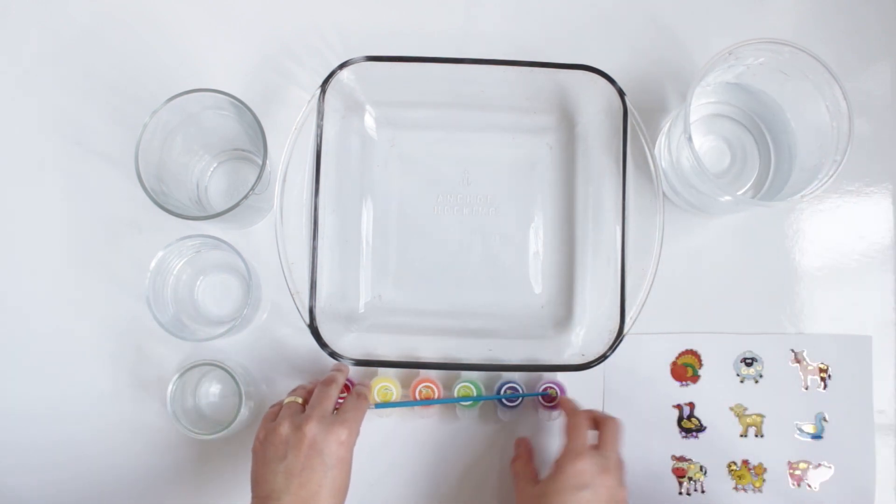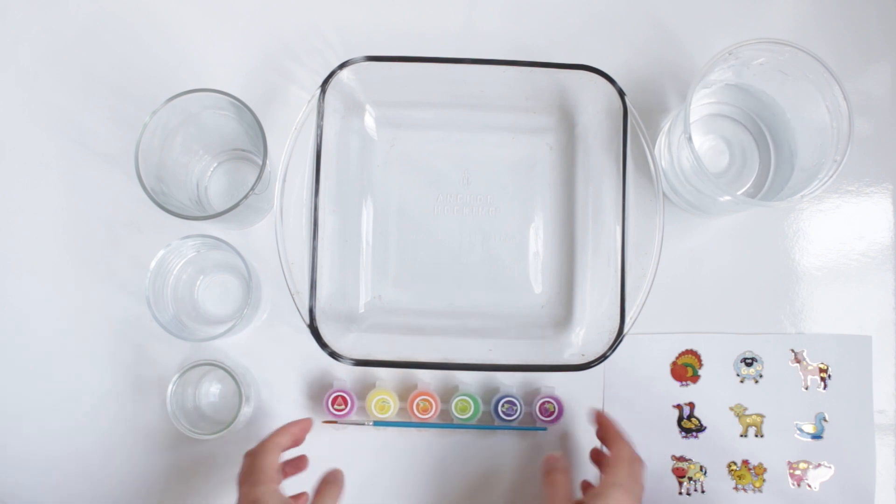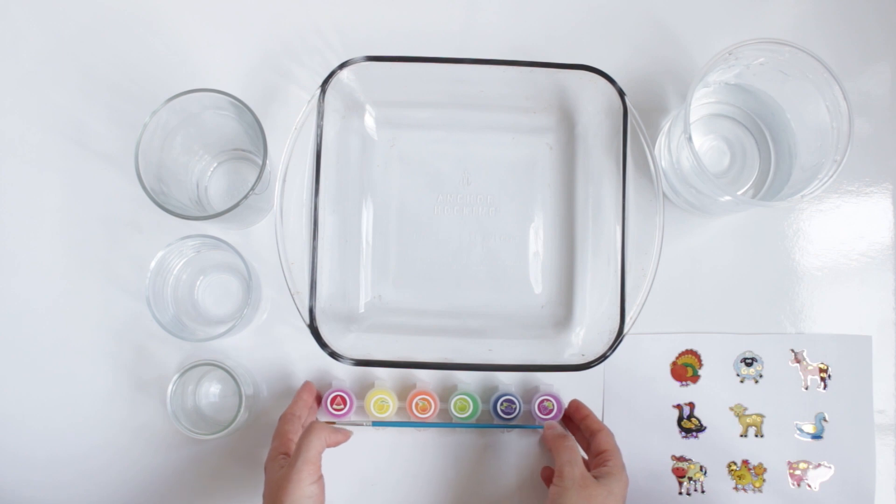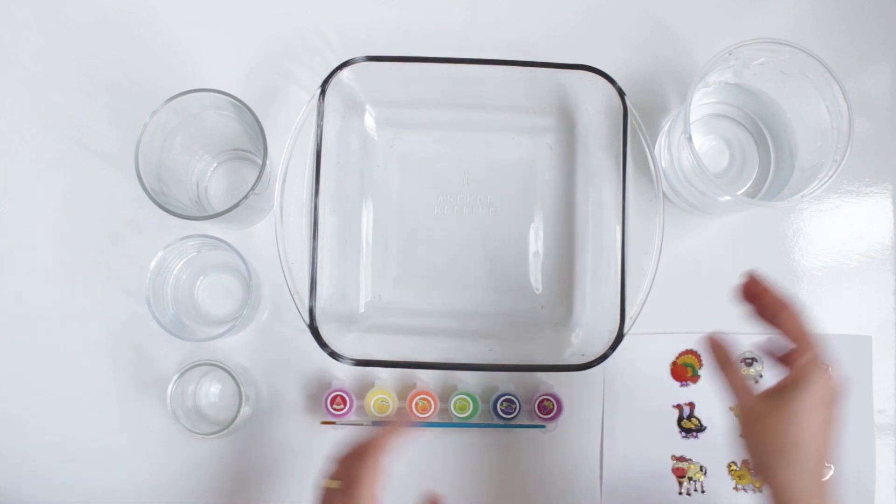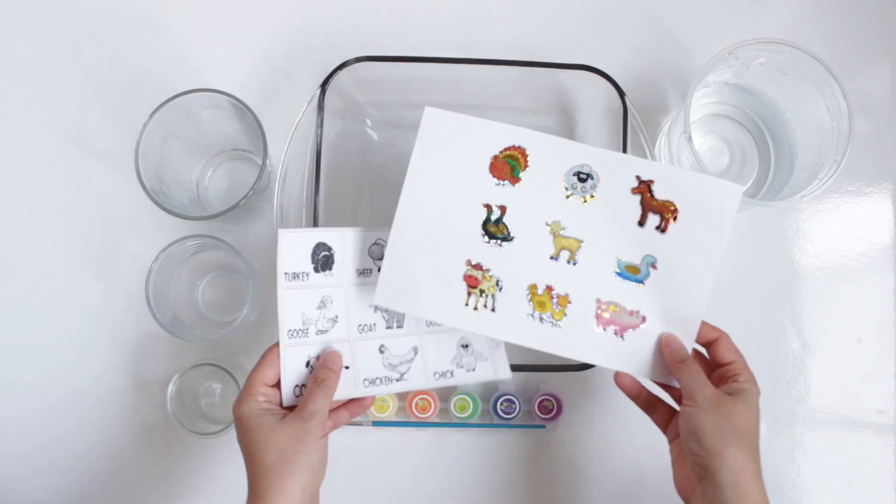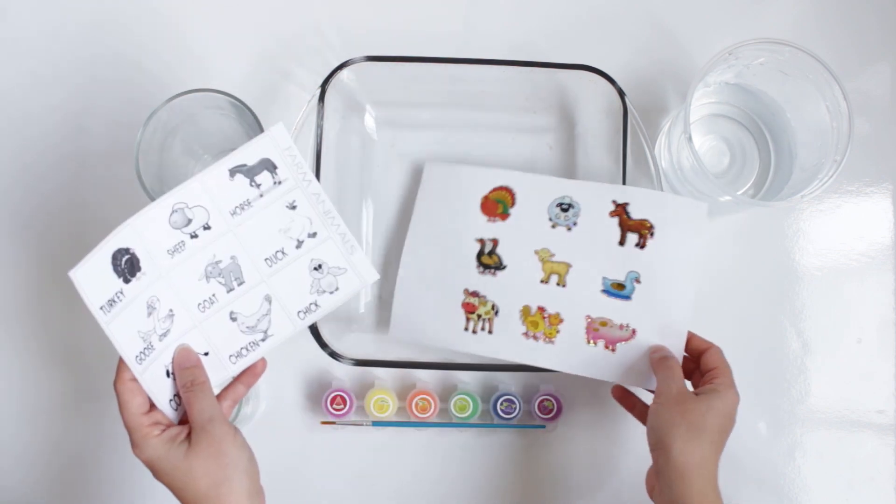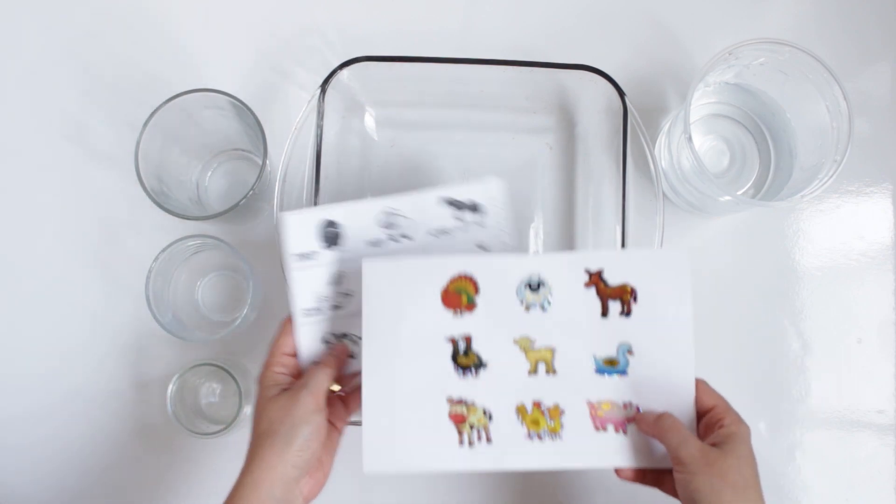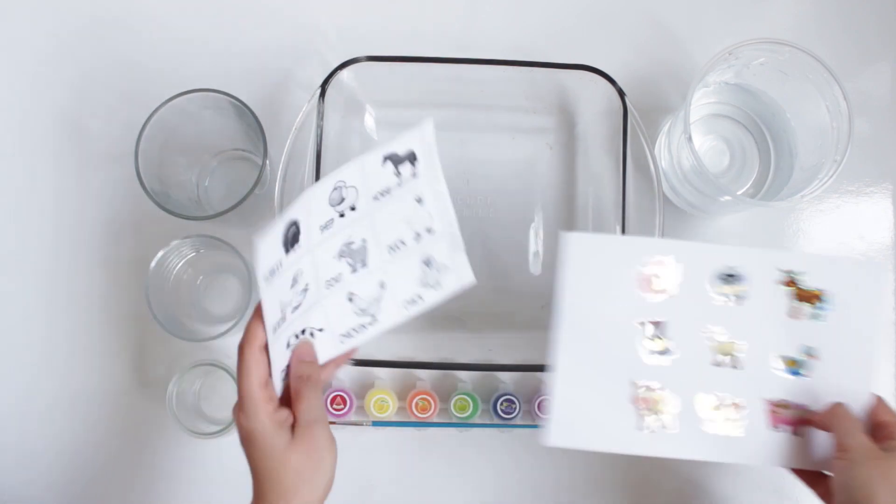Some ink or food coloring, whatever you have available. Here I'm using some ink but if you have food color is also fine. And some pictures of farm animals. Here I have two sets, one with the stickers and one that I just printed out. You can use any of these or both if you want.